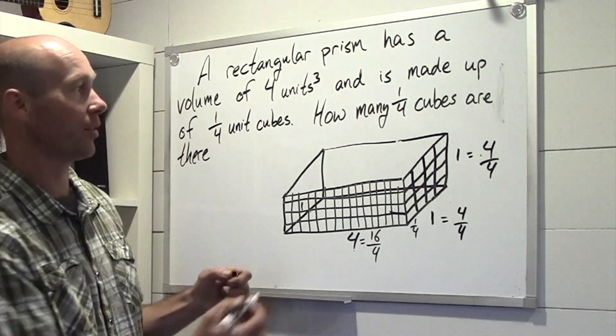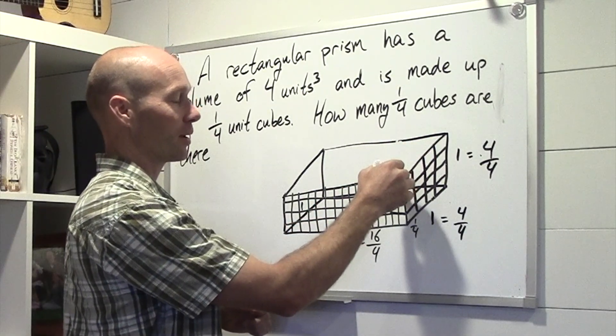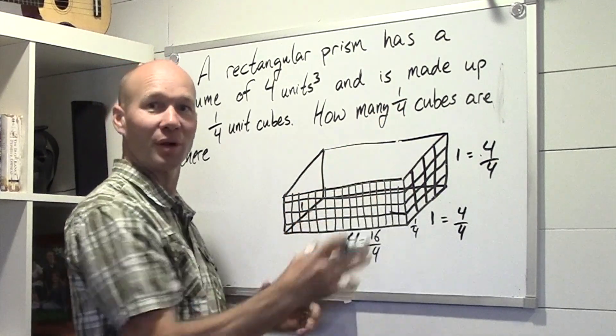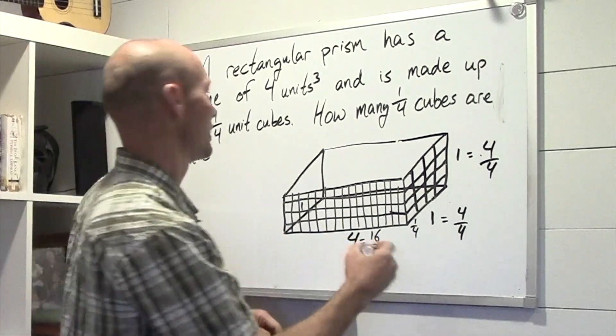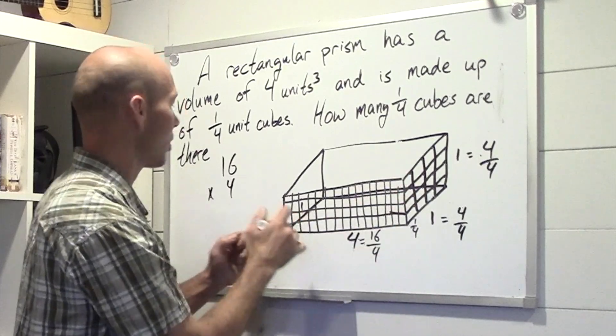Well, we could count all of them, right? We have 1, 2, 3, 4. And then we can count 16 of those 4. Well, we can do that pretty easily, right? 16 times 4 instead of counting all of them.